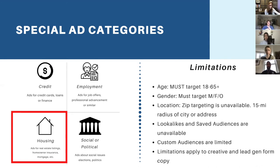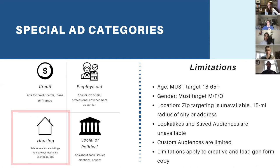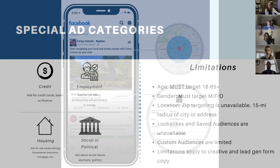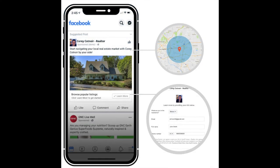Housing is the same. You guys know it's affected JLS pretty heavily. You can now only target within a 15-mile radius of certain areas, and you can't get to that granular zip code level that we used to be able to.